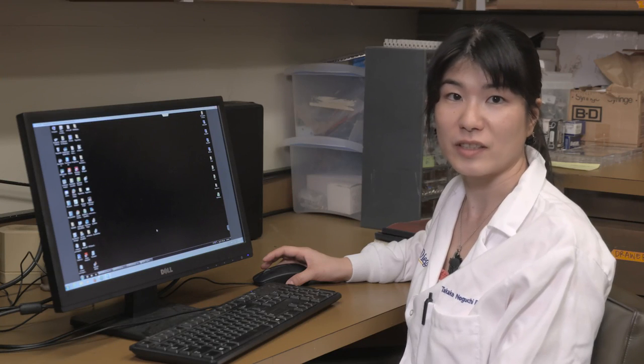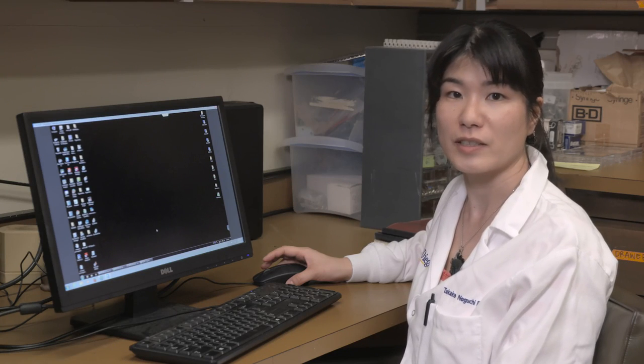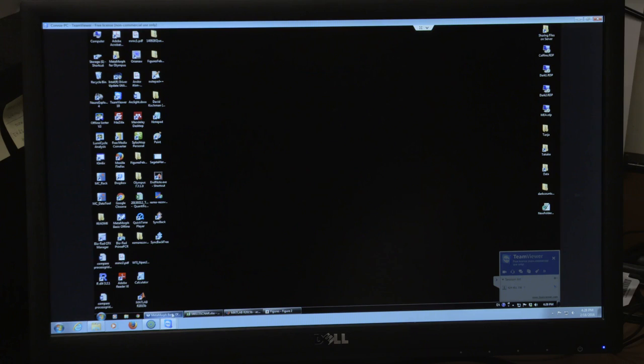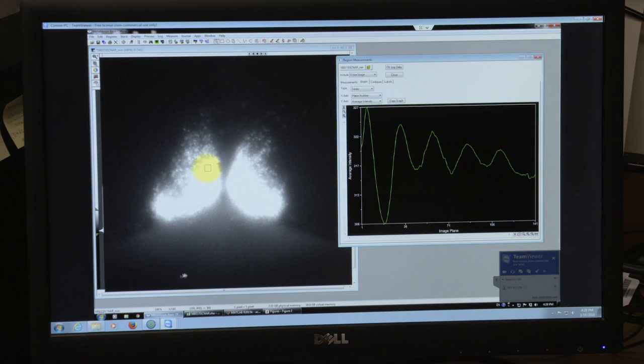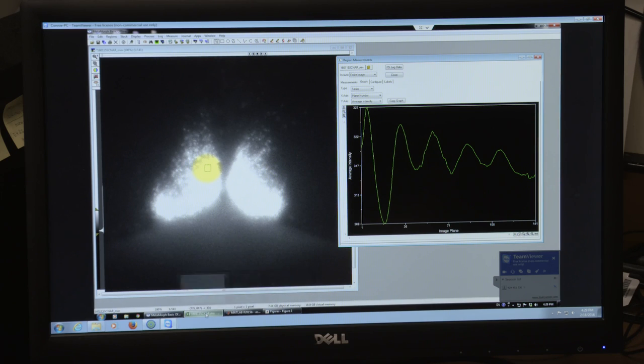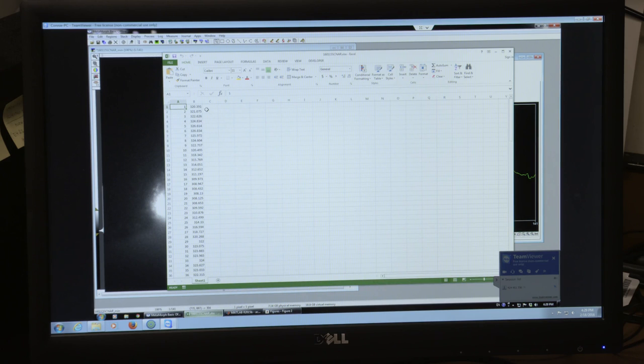Bioluminescence intensity of single neurons is analyzed using Metamorph. We select a region of interest in the stack file. The values within the region are exported to Excel for bioluminescence intensity analysis of single neurons.